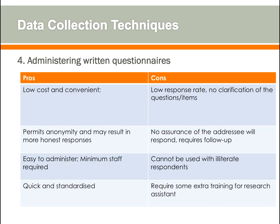The pros of questionnaires are low cost, convenience, anonymity which may result in more honest responses, ease of administration, minimum staff required, and they are quicker and standardized. The cons include low response rate, no clarification of questions to respondents, no assurance the addressee will respond — requiring follow-ups — and they cannot be used with illiterate respondents. Research assistants may also require extra training to administer them.